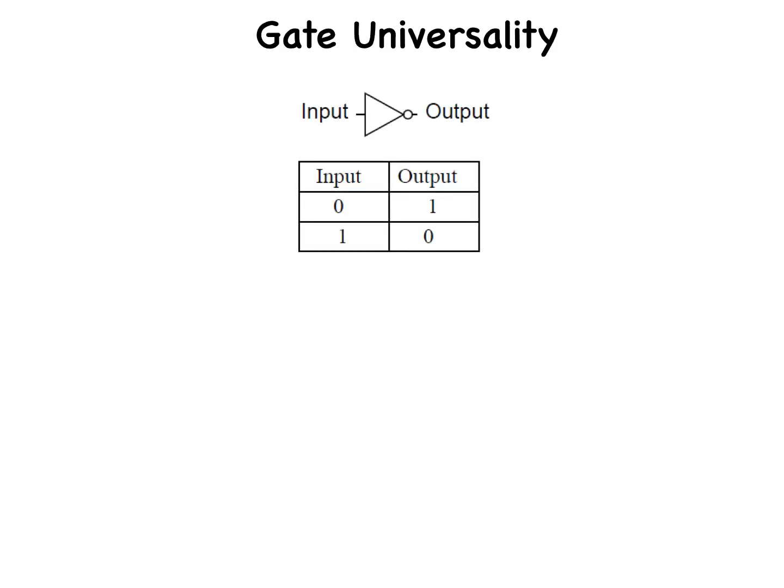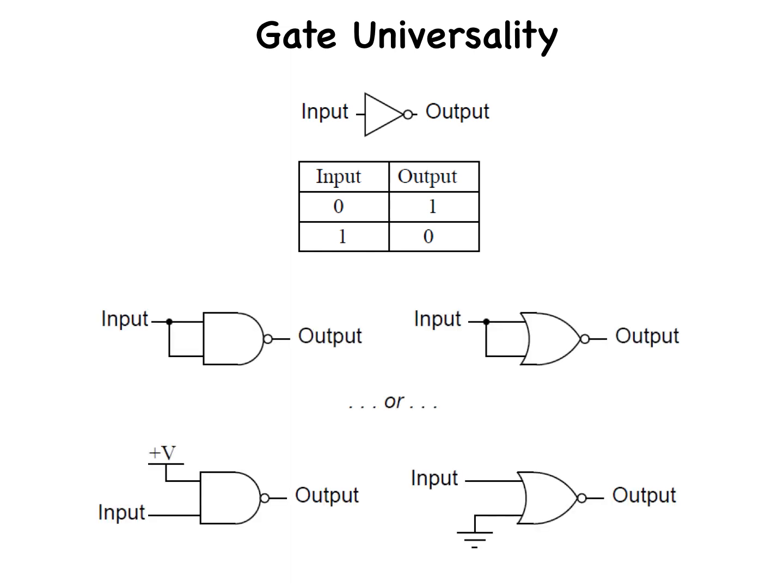Gate universality. NAND and NOR gates possess a special property — they are universal. That is, given enough gates, either type of gate is able to mimic the operation of any other gate type. The ability for a single gate type to mimic any other gate type is enjoyed only by the NAND and the NOR. In fact, digital control systems have been designed around nothing but either NAND or NOR gates, all the necessary logic functions being derived from collections of interconnected NANDs or NORs. There are two ways to use a NAND gate as an inverter, and two ways to use a NOR gate as an inverter.